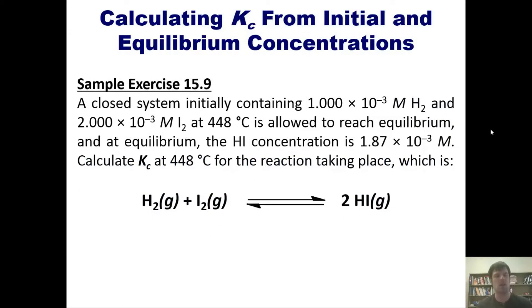To illustrate how this is done, I'm going to show you an example problem on the board. This one. A closed system initially containing this concentration of H2 and this concentration of I2 at 448°C is allowed to reach equilibrium. And at equilibrium, the HI concentration is this. Calculate Kc at 448 for the reaction taking place, which is this one right here. How do we do that? I'll show you that right now.